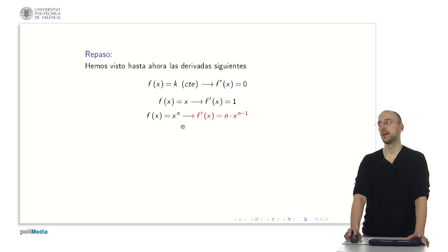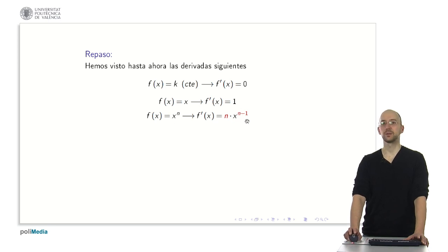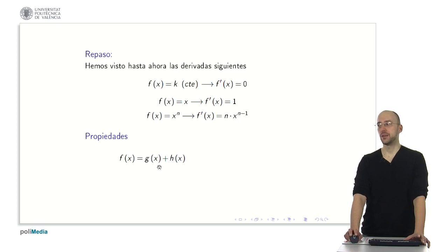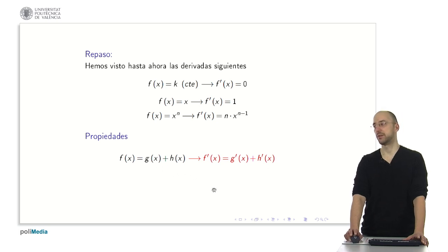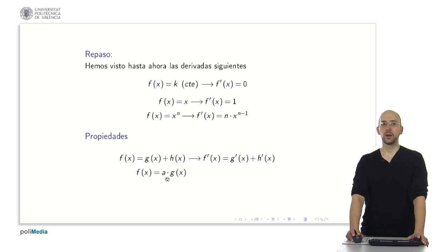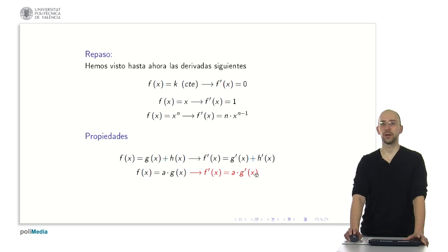Pay attention to the construction of this derivative. If someone asks you to calculate x raised to a number, the derivative simply consists of taking that number, lowering it in front, multiplying, and subtracting 1 from the existing exponent. The properties of the derivatives tell us: if I have a function that is the sum of two functions, the derivative of this sum is simply the sum of the derivatives. Also, if we have a number multiplying a function g, its derivative consists of leaving the constant multiplier exactly the same and differentiating the function that accompanies it.